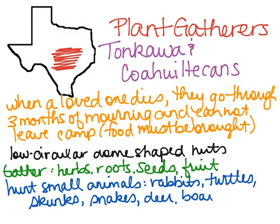One interesting thing about this group is that when a loved one dies, they go through a three-month period of mourning where they're not allowed to leave the camp at all during that time. That means food must be brought to them from other community members, which can be really difficult.